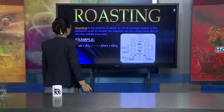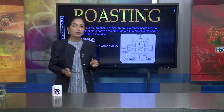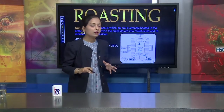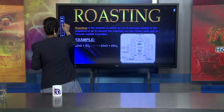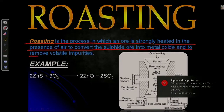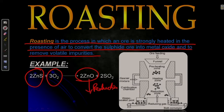Roasting is just a kind of calcination process, but different because in calcination we don't use air — the whole process occurs in the absence of air — whereas in roasting, we heat the ore in excess of air. Roasting is the process in which an ore is strongly heated in the presence of air to convert the sulfide ore into metal oxide and to remove volatile impurities. For example, zinc sulfide reacted with excess oxygen converts to zinc oxide, which is then reduced to pure zinc metal.